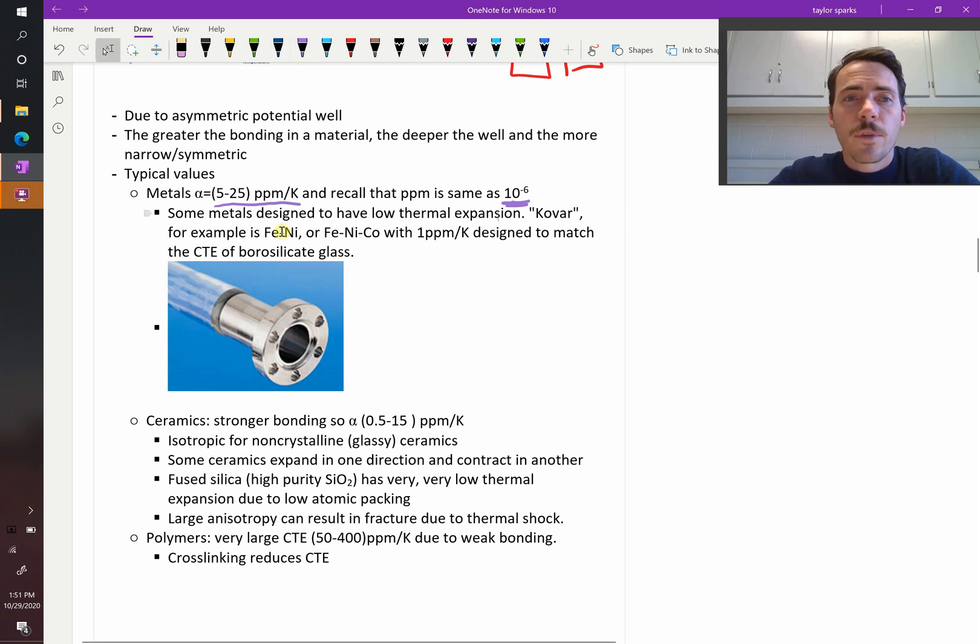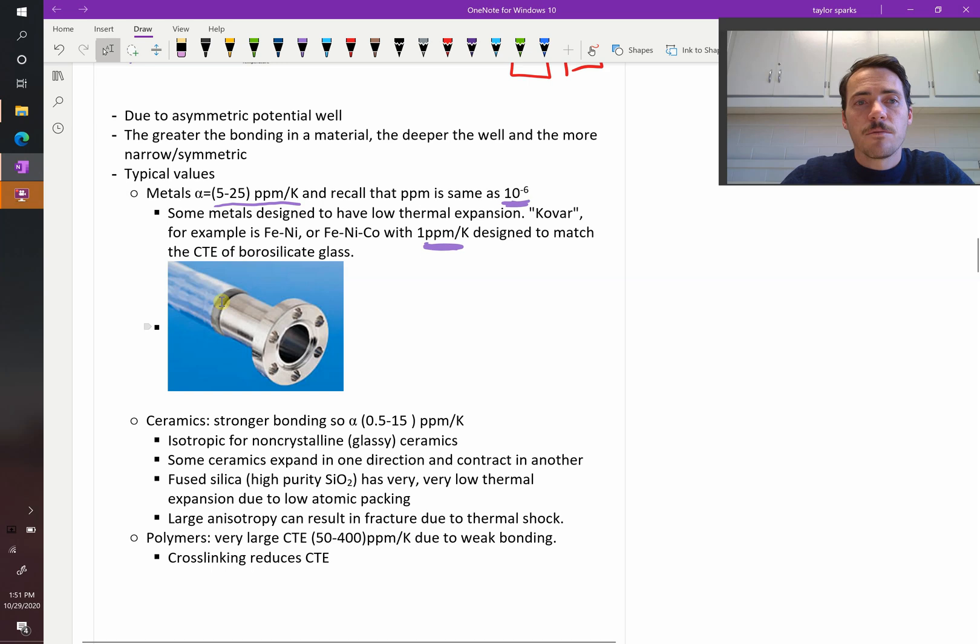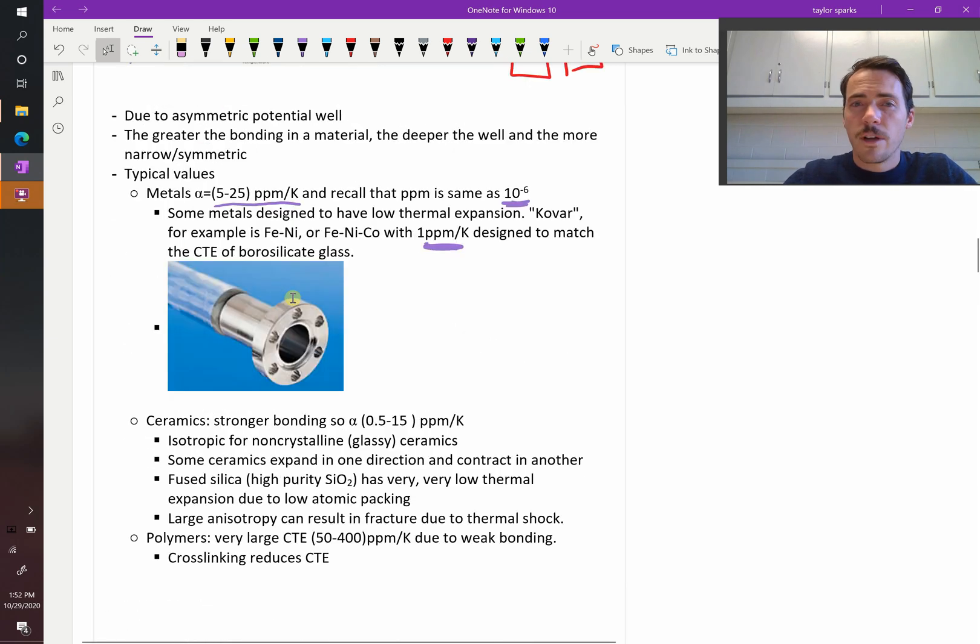For example, one material is called Kovar. It's an alloy of iron and nickel, or they'll add some cobalt to it as well. The point is that it has a thermal expansion of about 1 parts per meter per Kelvin, which is really low for a metal. And they do that on purpose because they want it to match the thermal expansion of glass. Borosilicate glass basically matches the coefficient of thermal expansion, and that's going to lead us to have a material that is robust even as it gets cycled from high to low temperatures because it's not going to fracture due to a mismatch in thermal expansion. Mismatch in thermal expansion is a big deal. We'll talk about that in just a moment when we get to thermal stress.